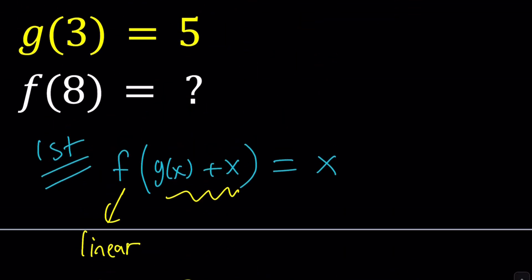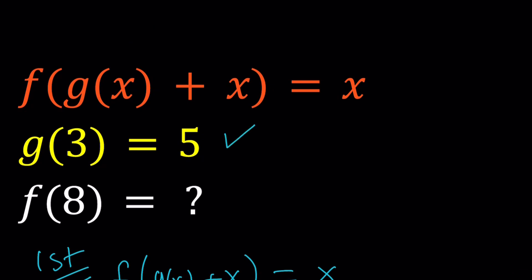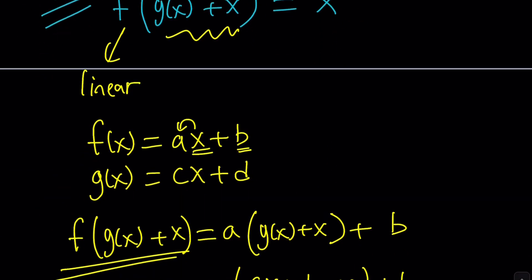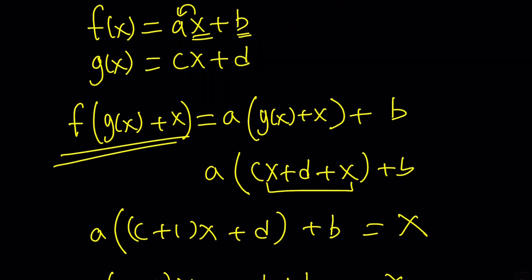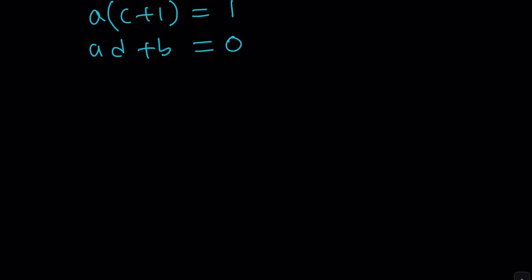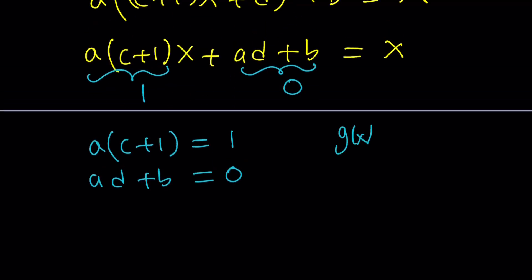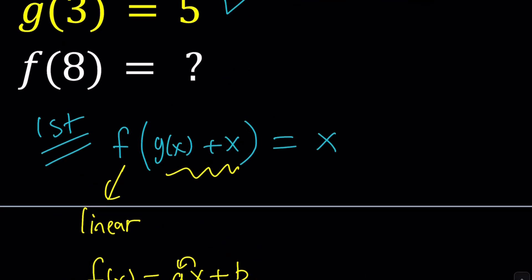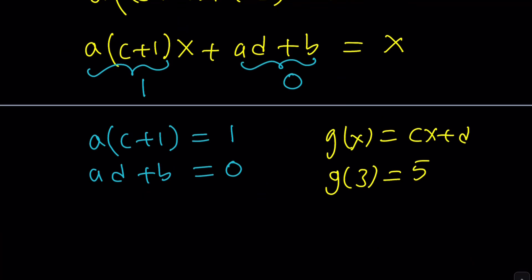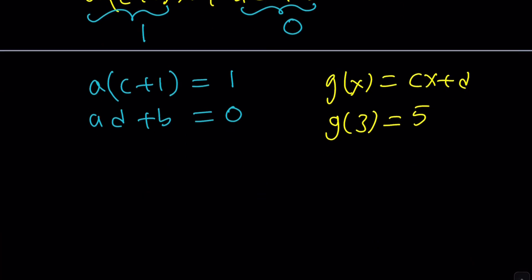Let's take a look at the other given: g(3) = 5. What is that? Well, g(3) can be found by replacing x with 3 here. So since g(x) = cx + d, let's write g(x) = cx + d, and g(3) is just given as 5. So let's evaluate g(3). g(3) is going to be 3c + d. So 3c + d = 5. That gave us three equations, but we have four variables.